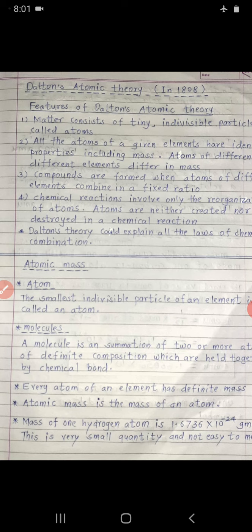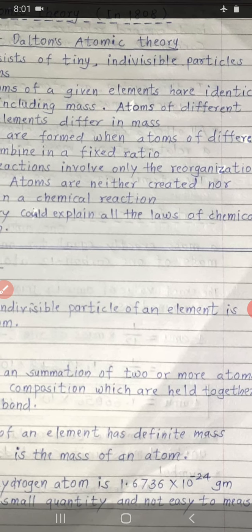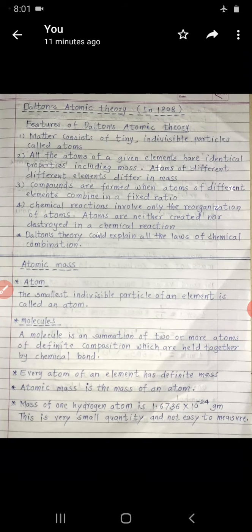What is the mass of one hydrogen atom in grams? This is very important — it may be asked in MCQs. The mass of one hydrogen atom in grams is 1.6736 × 10⁻²⁴ grams. This mass is a very small quantity and not easy to measure because of 10 raise to minus 24 — it is very, very small and cannot be measured easily.